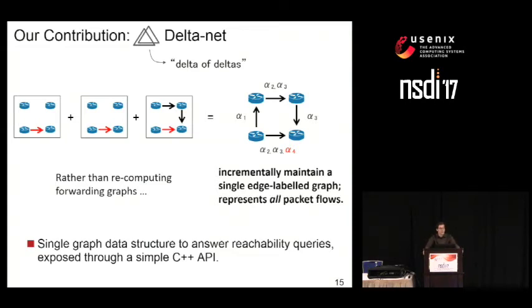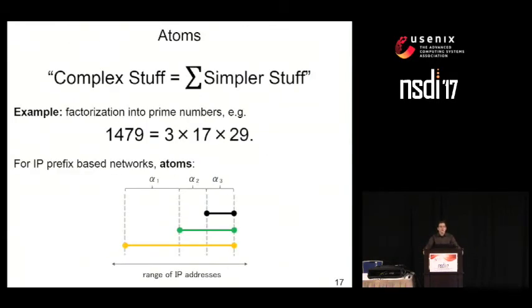What we get is a single graph data structure that can be used to answer reachability queries, exposed through a simple C++ API. A fundamental concept in this API is the idea of atoms, denoted by the Greek letter alpha. These are the labels that appear in this single edge-labeled graph. To give a better idea of what these atoms are and why they are important: just as you can factor a number into its prime numbers, in this work the factorization is with respect to atoms — allowing us to express any Boolean combination of forwarding rules through these atoms. It's a way of factorizing forwarding tables.